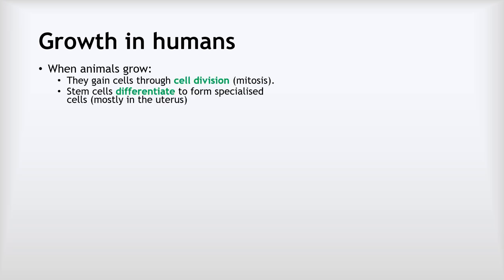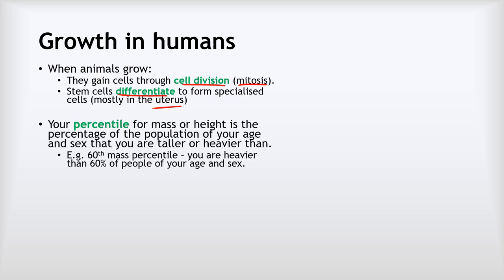Now let's look at how growth happens in humans and other animals. Animals gain cells through cell division — specifically mitosis — and stem cells differentiate after mitosis to form all the different specialized cells, mostly during development in the uterus. We can monitor growth using percentiles: your percentile for mass or height measures the percentage of the population of your age and sex that you are taller or heavier than.